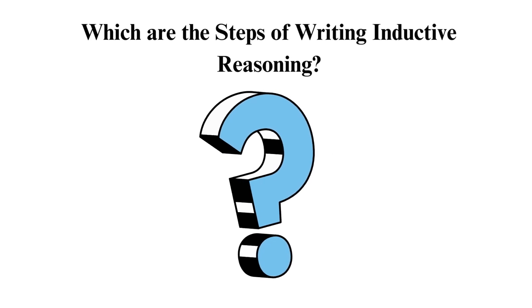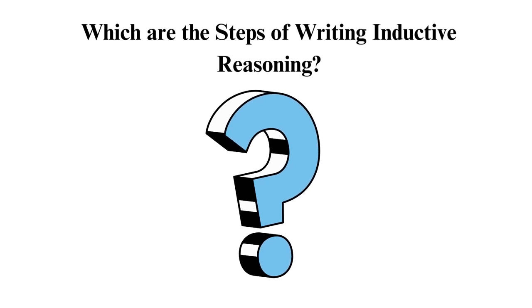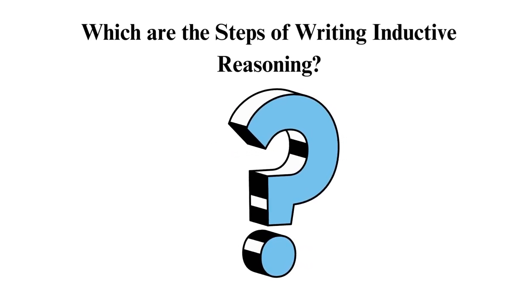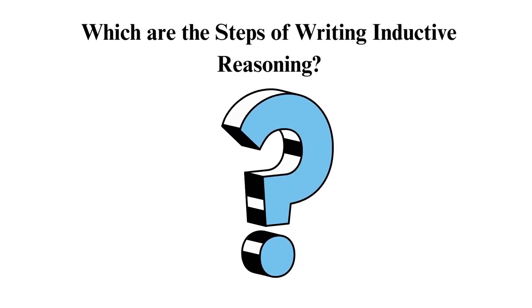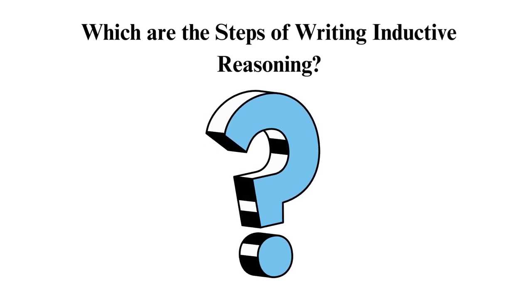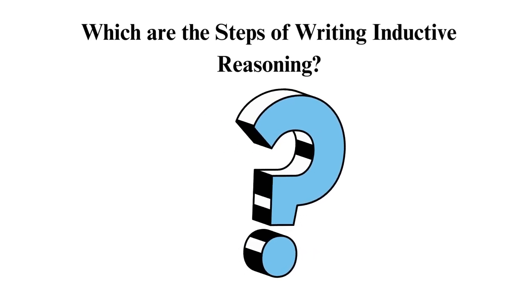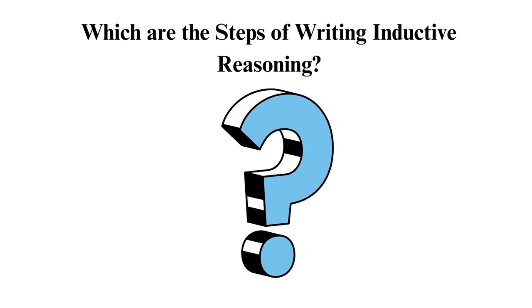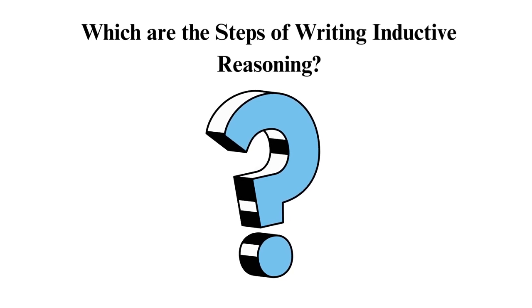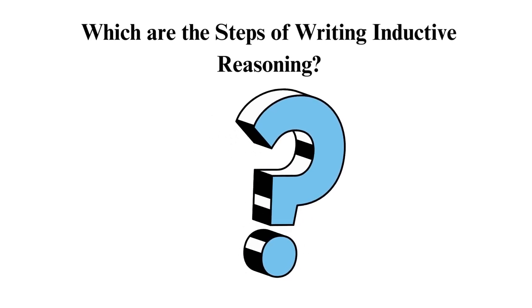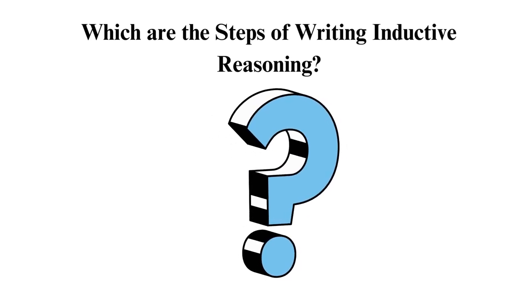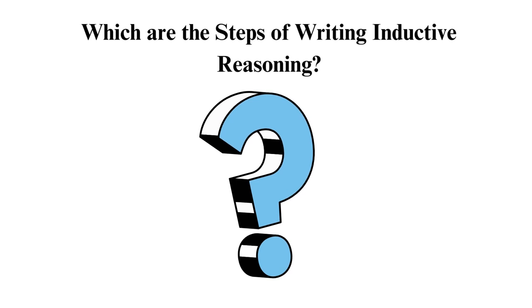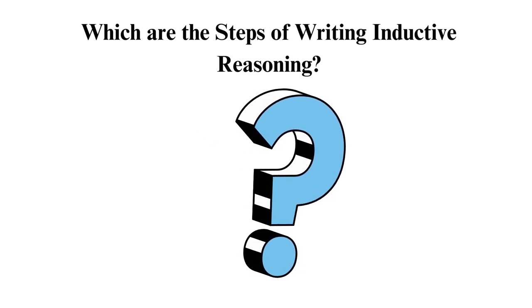Regarding the steps of writing inductive reasoning: inductive reasoning makes a general rule from several observations. This argument concludes from observations, and the process includes four stages. The first stage is observation, where you collect facts without any bias.